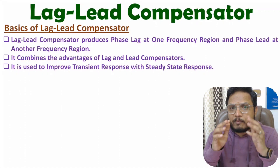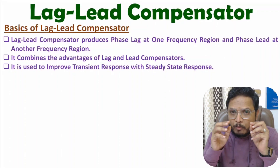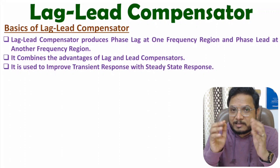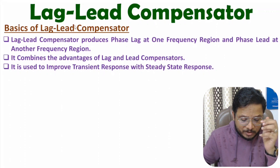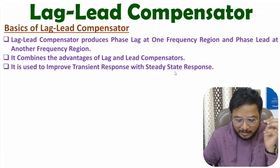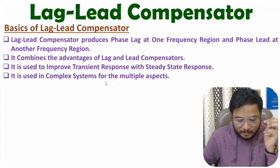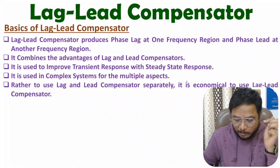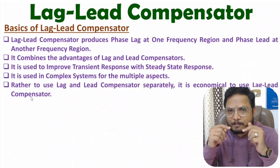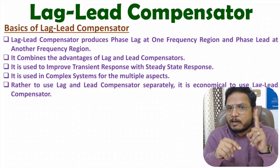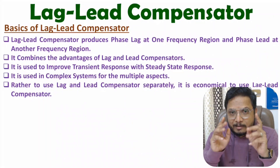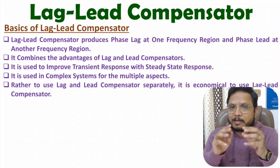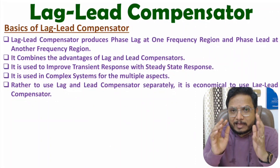It combines the advantages of both lag and lead compensators. It is used to improve transient response — focusing on rise time, peak time, and maximum peak overshoot — and steady state response, focusing on settling time and steady state error. It is used in complex systems, and it is more economical than using lag and lead compensators separately, since the combined network uses fewer elements.